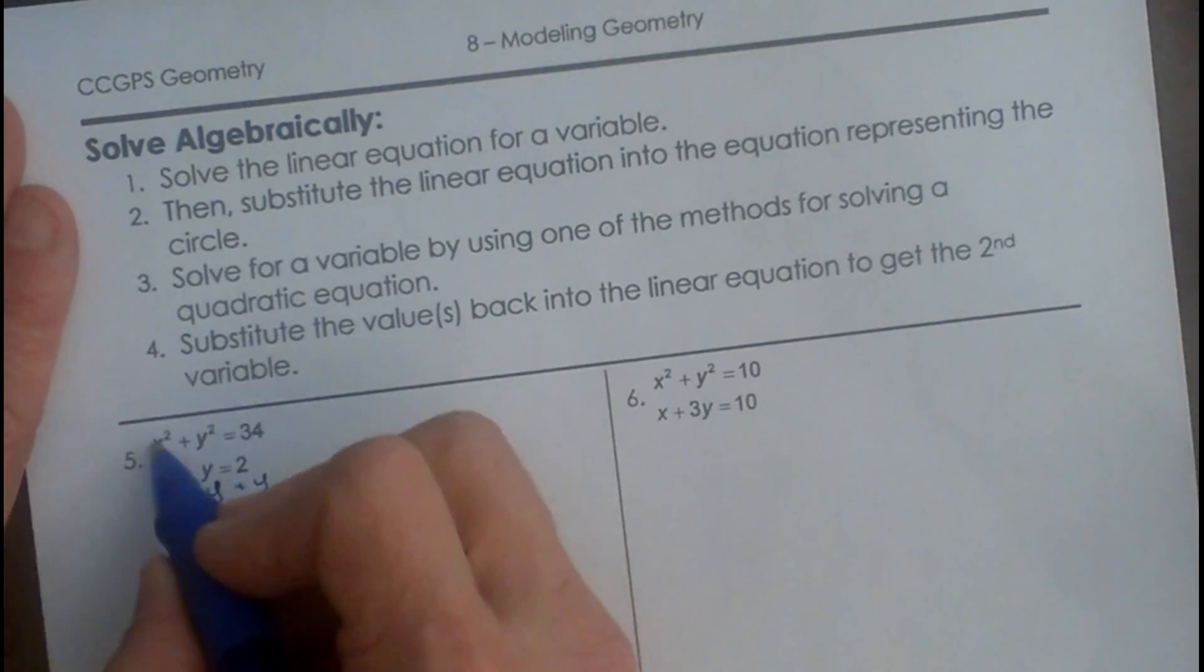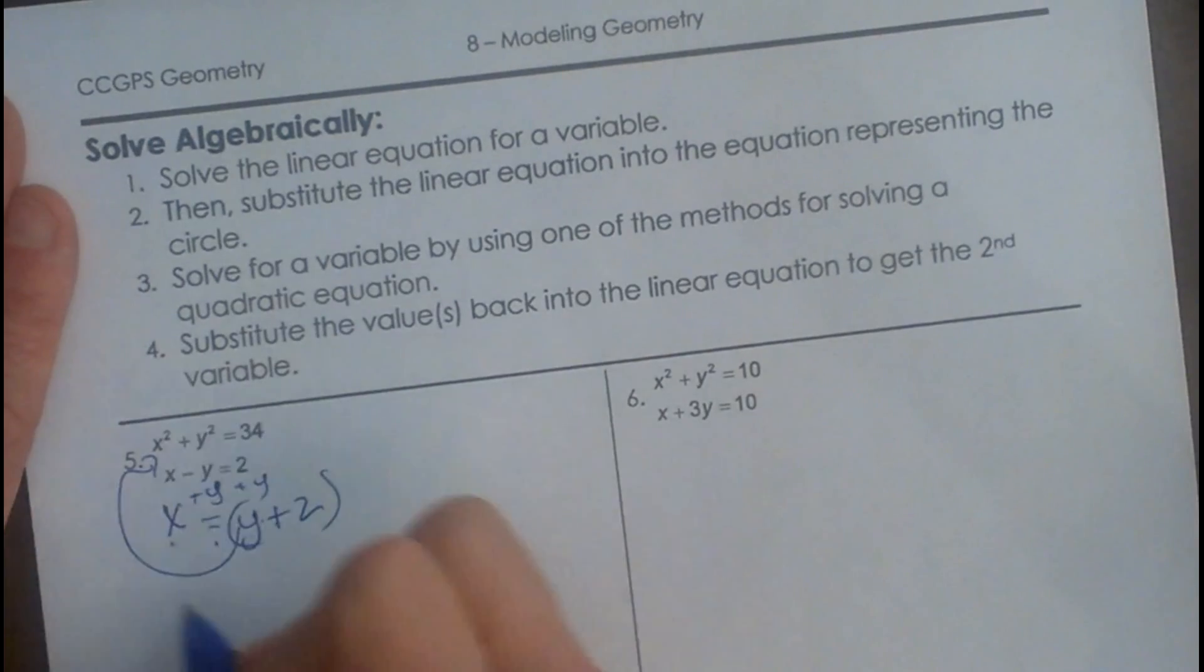So let's plug y plus 2 in for x. Now we're going to substitute. So (y plus 2) squared plus y squared equals 34.